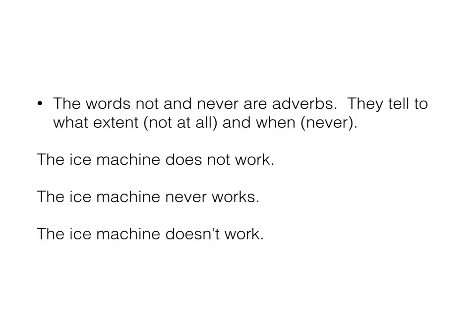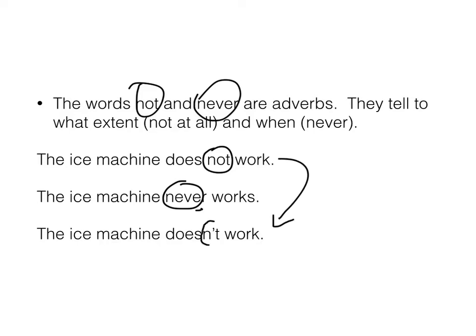Now, the words not and never are adverbs. They tell to what extent — not at all — and when. For example: 'The ice machine does not work' and 'The ice machine never works' — both adverbs. Also, 'The ice machine doesn't work' — the n't stands for the word not. So when we diagram or identify parts of speech, we have to identify that as an adverb. It's not part of the verb. The verb here would be does work; not is not part of the verb phrase.